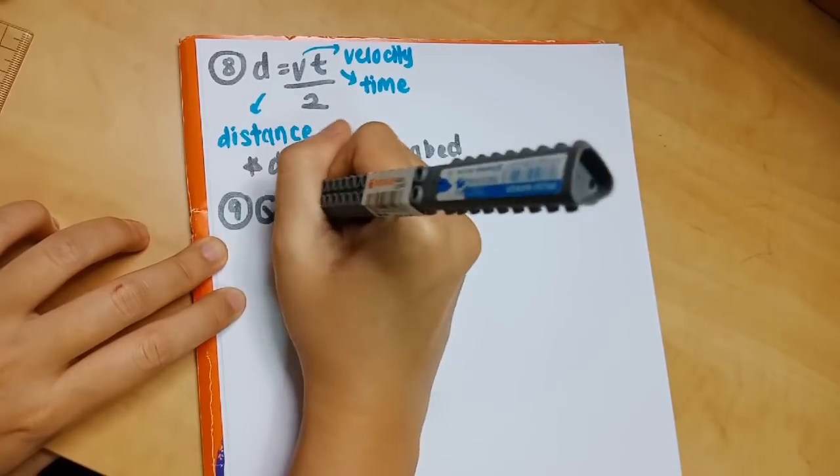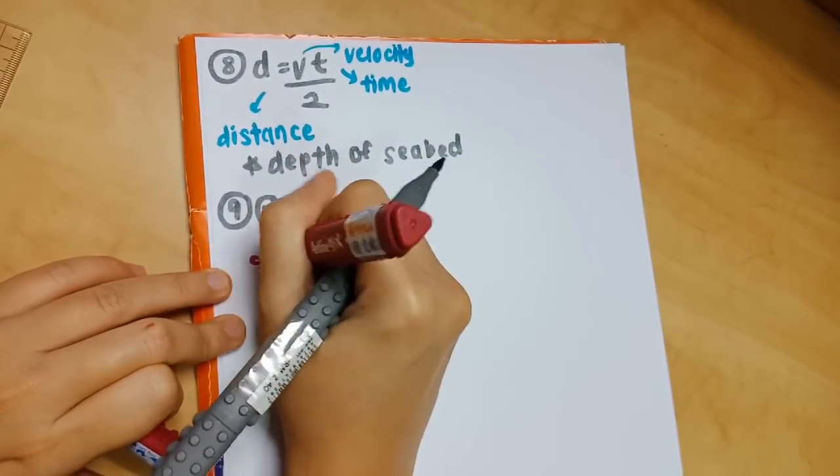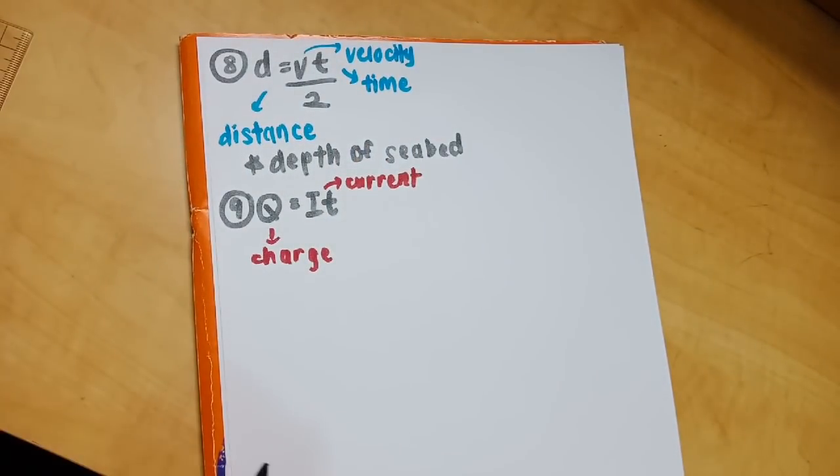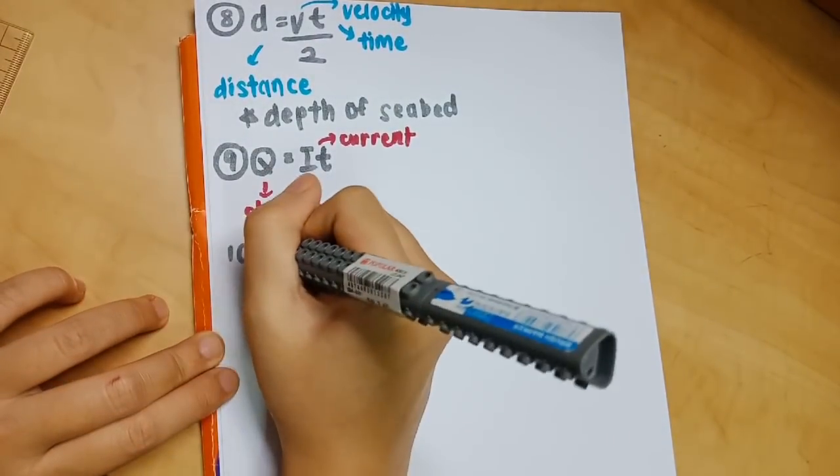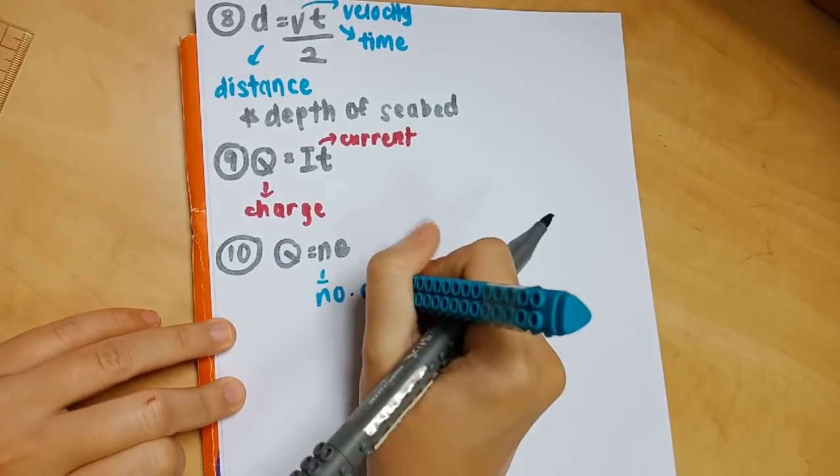Number 9: q equals it. Q refers to charge, i refers to current, and t refers to time. Number 10: q equals ne. N refers to the number of electrons, while e is the charge of electrons, which is 1.6 times 10 to the power of negative 19 coulomb.